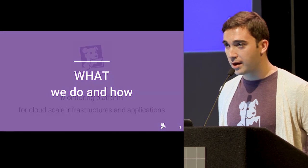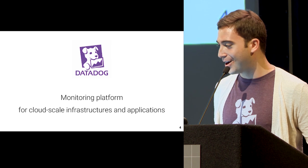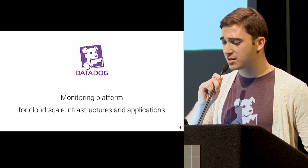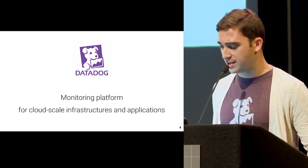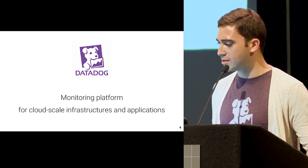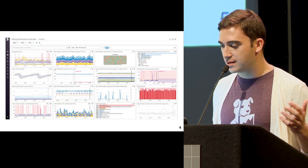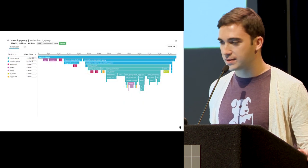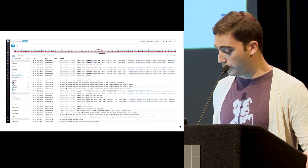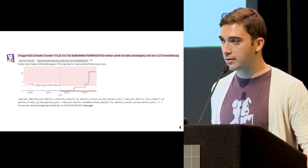Quick introduction of what Datadog does. We are a monitoring platform for cloud-scale infrastructure and applications. We aggregate from more than 250 technologies for troubleshooting, alerting, and graphing. We ingest trillions of data points per day through performance metrics, traces, requests through your systems, and logs. You can correlate all of that on one unique platform and set up advanced alerting on top of it.